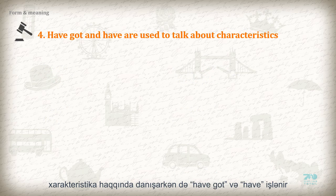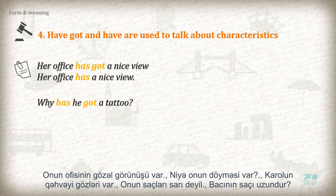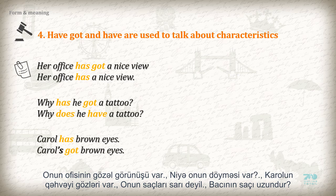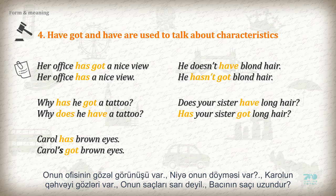Four: Have got and have are used to talk about characteristics. Her office has got a nice view. Her office has a nice view. Why has he got a tattoo? Why does he have a tattoo? Carol has brown eyes. Carol has got brown eyes. He doesn't have blonde hair. He hasn't got blonde hair. Does your sister have long hair? Has your sister got long hair?